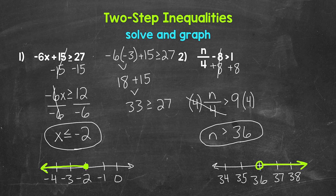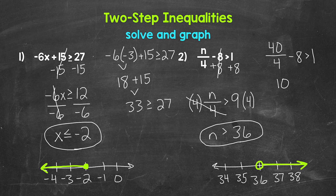Let's check something greater than 36 to make sure it works — let's use 40. Plug 40 in for n: 40 divided by four minus eight is greater than one. 40 divided by four gives us 10, and 10 minus eight is two. Two is greater than one, so we are correct.